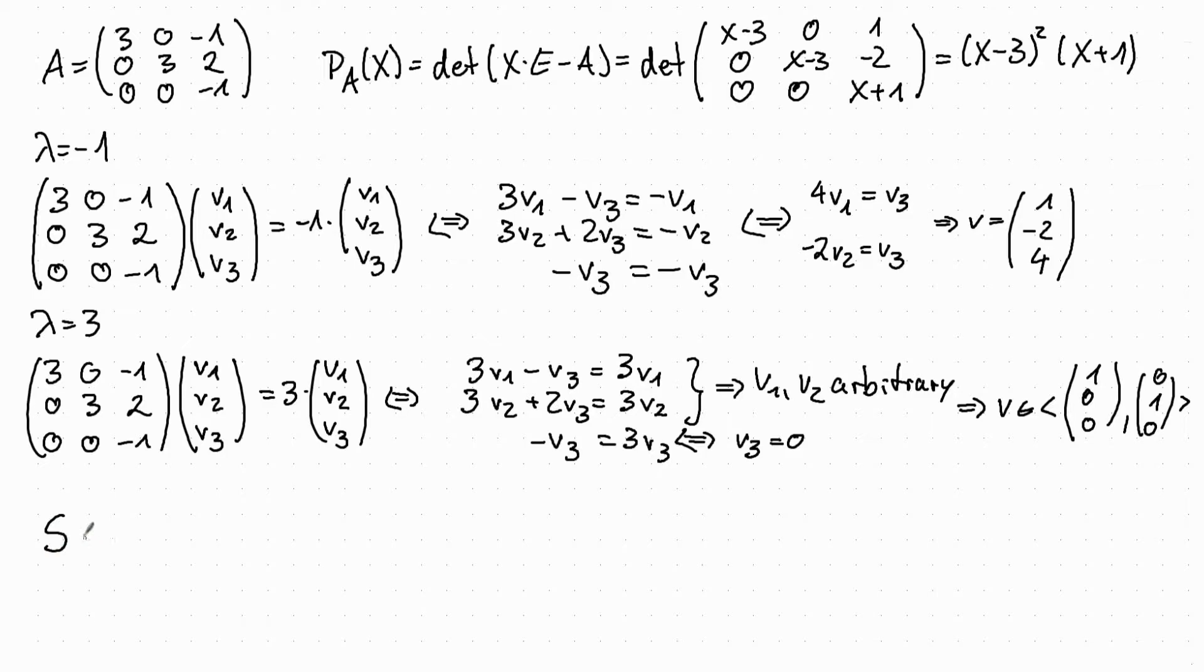Now we computed all the eigenvectors for all eigenvalues. And again, we just have to put the vectors as columns in our base change matrix and invert this matrix. So our base change matrix S consists of the eigenvectors as columns. We put those first: 1, 0, 0, 0, 1, 0 and this as a third one: 1, minus 2, 4.